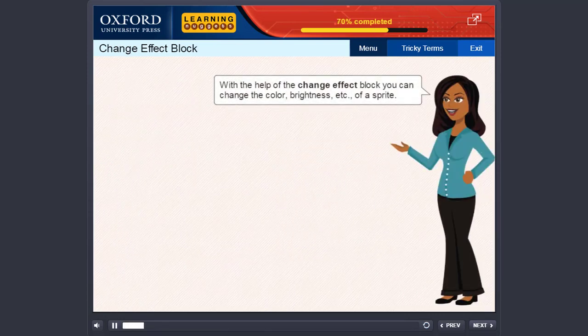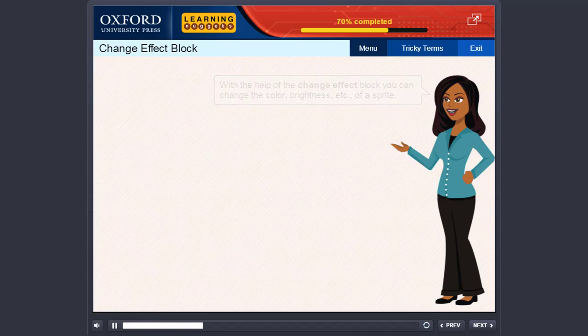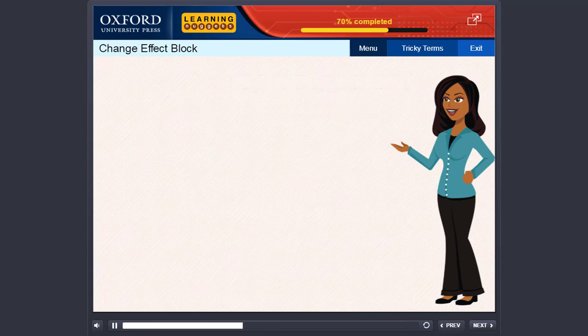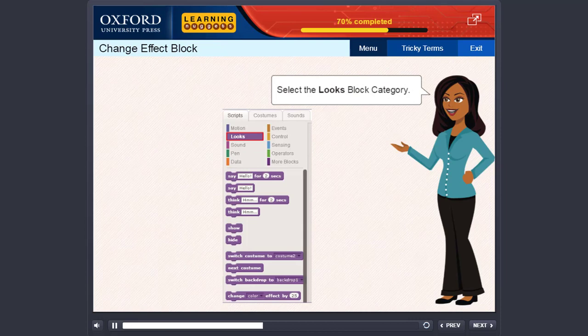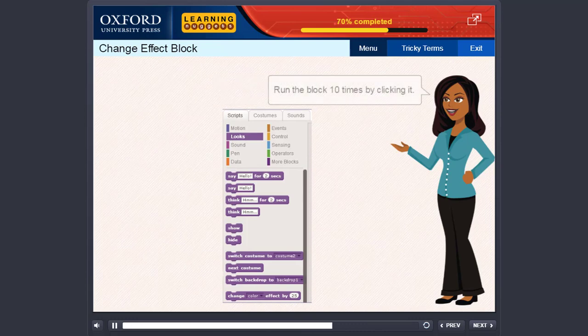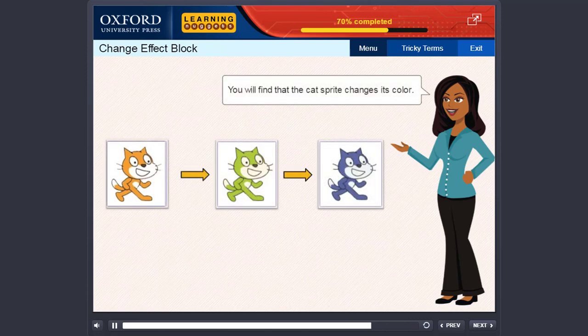With the help of the Change Effect block, you can change the color, brightness, etc of a sprite. Let us now change the color of the cat sprite. Select the Looks block category. Drag the Change Effect block to the Scripts area. Run the block 10 times by clicking it. You will find that the cat sprite changes its color.